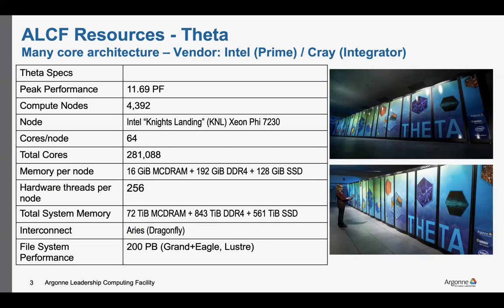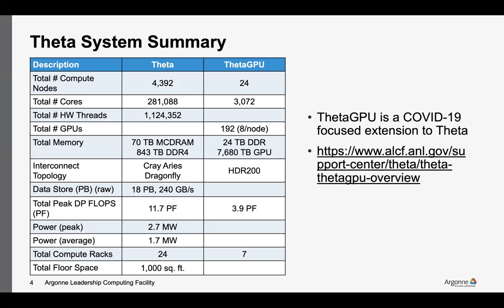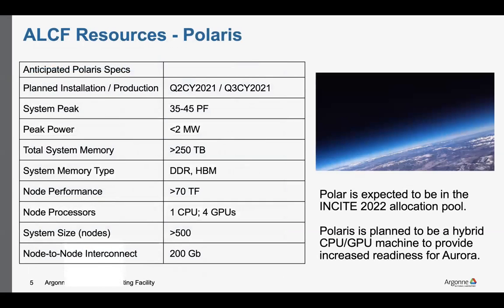As you have already heard, we provide that right now primarily through Theta, including Theta GPU, which was a recent extension. Theta is our primary production resource. Moving into 2022, we will also have available a new system called Polaris. I'm repeating these names because they're relevant as we talk about the allocation programs.